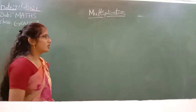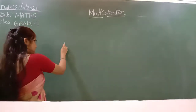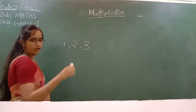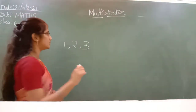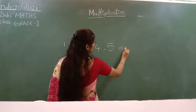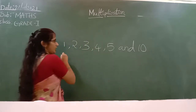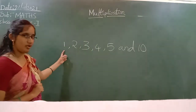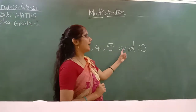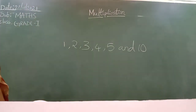In your class you have to learn six tables — sorry, six tables. One, two, three, four, five and ten. You have to learn six multiplication tables: multiplication table of one, two, three, four, five and ten. You have six tables in your class.